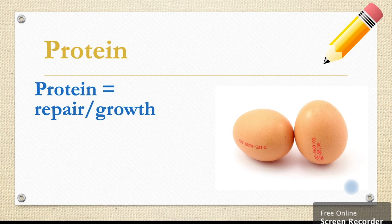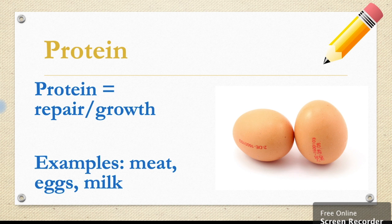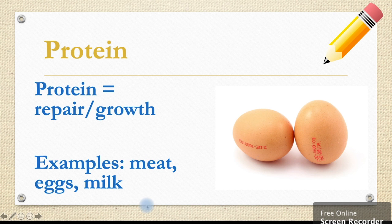First up we have protein. You'll notice we have some blue text and a pencil. Whenever you see this, pause the video and write down notes. This will help you later on. The main function of protein is repair and growth of the body. Food examples include meat, eggs and milk.